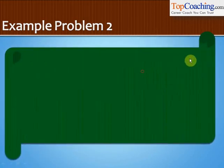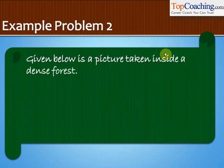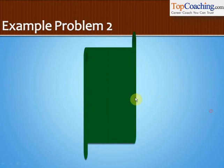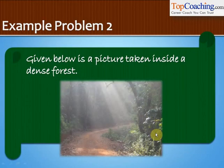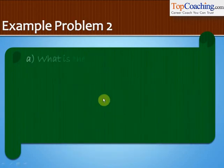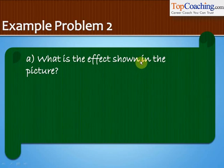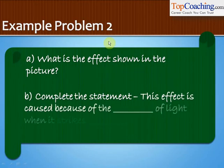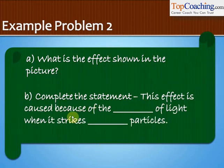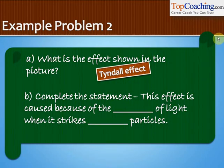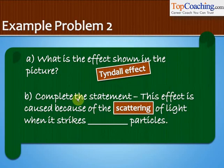Here is another problem. Given below is a picture taken inside a dense forest. We are asked: what is the effect shown in the picture? Complete the statement: this effect is caused because of the dash of light when it strikes dash particles. Clearly the effect shown is the Tyndall effect. In dense forest, light strikes water particles or water molecules and gets scattered, the light beam becomes visible and the particles also become visible. This effect is caused because of the scattering of light when it strikes colloidal particles.